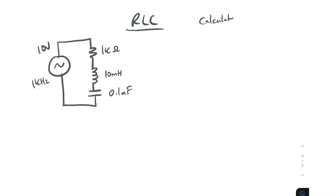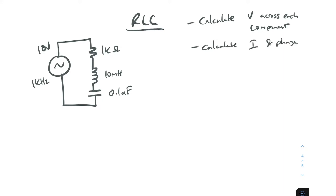Let's calculate the voltage across each component. We'll also calculate the current and phase, and then we'll finally draw a phasor diagram. To calculate the current, we're going to need to calculate the total impedance. Sticking to basic Ohm's law, V equals IR. Once we've got the impedance, we can get the total current, and then multiply each of the reactances by the current to get the voltage across each component. Then we can draw the phasor diagram.